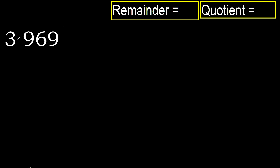969 divided by 3. 9 is not less, therefore start with 9. 3 multiplied by which number is nearest? 3 multiplied by 4 is 12.